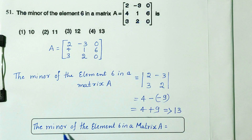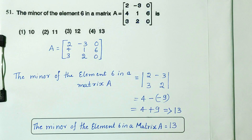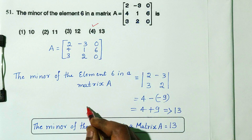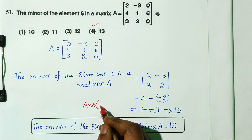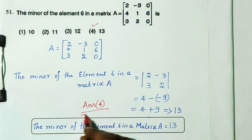The answer is 13. The minor of the element 6 in the matrix is 13. Checking the options, option 4 is the right answer.